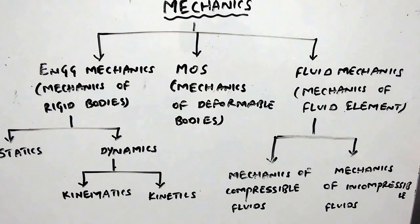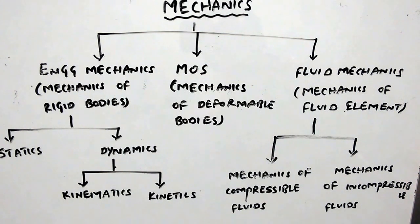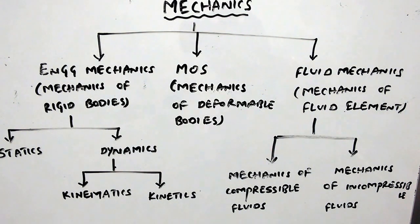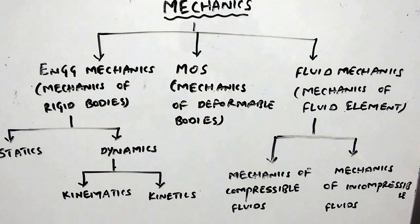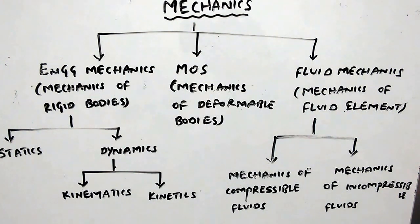Dynamics can be sub-classified into kinematics and kinetics. Kinematics is a sub-branch of dynamics that deals with bodies without consideration of forces, whereas kinetics is a branch of dynamics that deals with rigid bodies under the application of loads with consideration of forces.